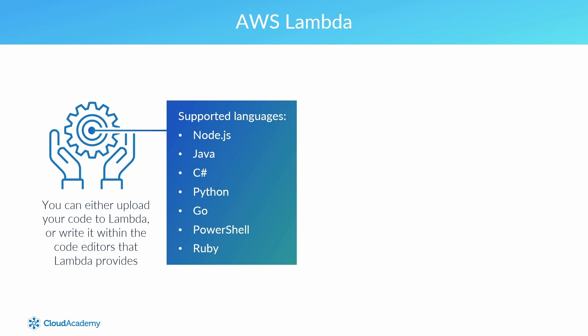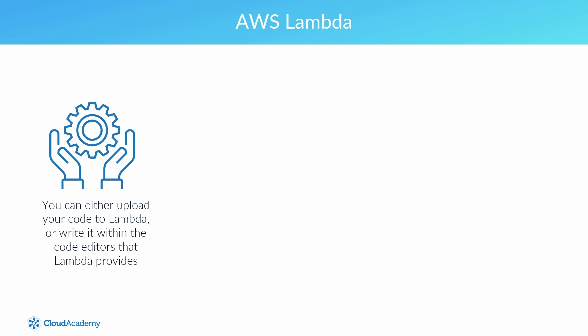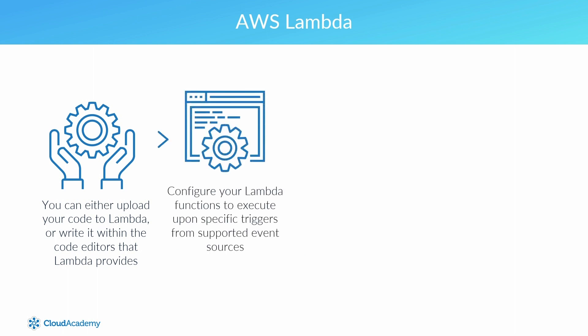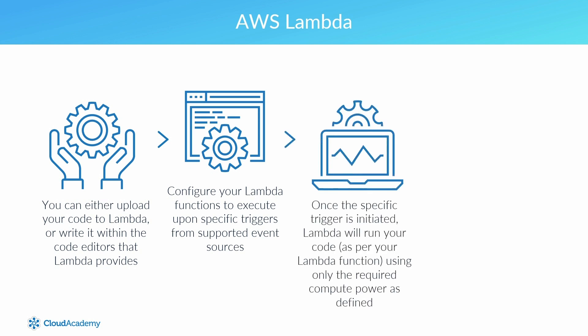It's worth mentioning that the code that you write or upload can also include other libraries. Once your code is within Lambda, you then need to configure Lambda functions to execute your code upon specific triggers from supported event sources, such as S3. For example, a Lambda function could be triggered when an S3 event occurs, such as an object being uploaded to an S3 bucket. Once the specific trigger is initiated during your normal operations of AWS, Lambda will run your code as per your Lambda function, using only the required compute power as defined.